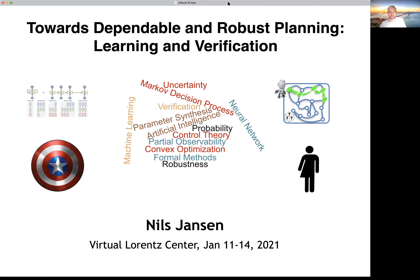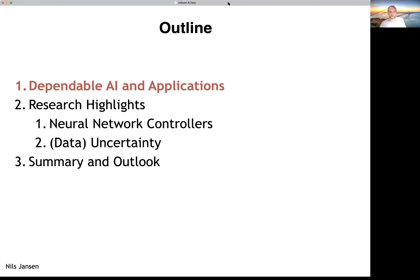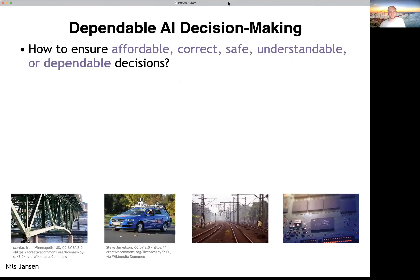I'm very happy to attend this workshop. Of course, it would be nicer to do it in person, but this is the best we can do at the moment. So this is a short outline. I'm going to first argue about our thinking of dependable and robust AI, then talk about a few research highlights, and then give a short summary and outlook. Let's dive into it.